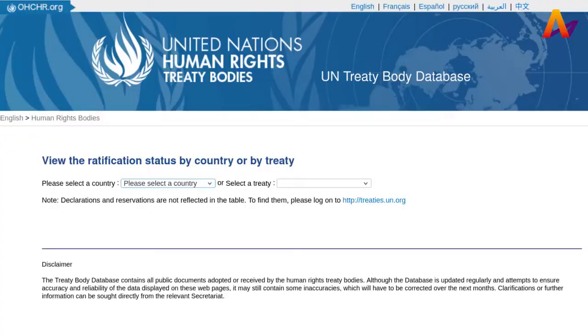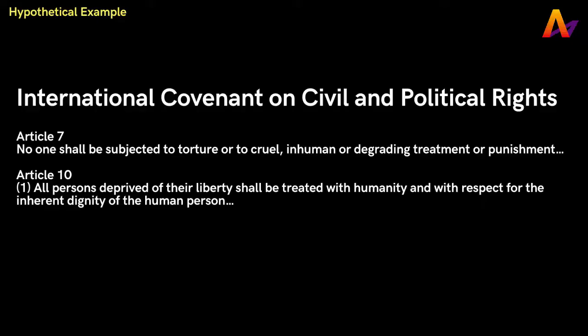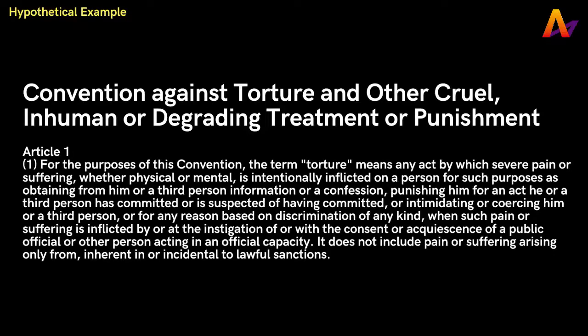On the UN treaty body database, you can search the ratification status by country or treaty. Treaties that seem relevant here are the International Covenant on Civil and Political Rights (ICCPR) and the Convention Against Torture (CAT). There might also be other treaties at the regional level. We have specific provisions related to torture under the ICCPR and the CAT, and the text of the provision is a good place to start. In some instances, because of the intensity or nature of certain acts, it is clear that the act constitutes torture. However, it can be hard to decide whether an act amounts to torture in other instances.